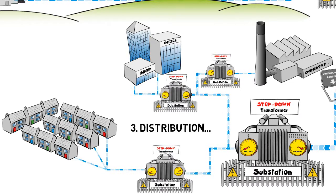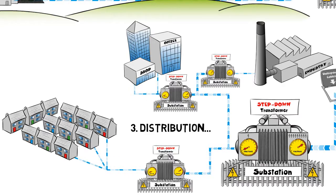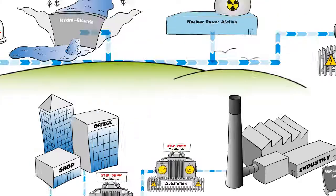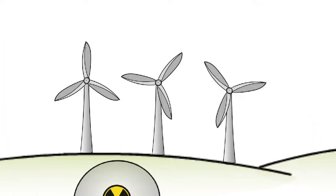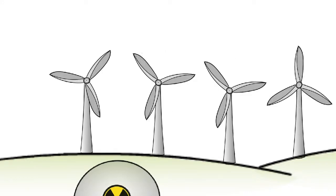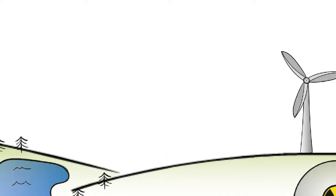Today's grid is running at capacity, and when faults on the line occur, there is a risk of blackouts. In order to meet the increased demand in electricity and reduce carbon emissions, the UK is investing in clean sources of energy, which are also called renewable energy resources.